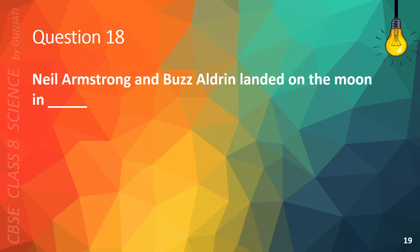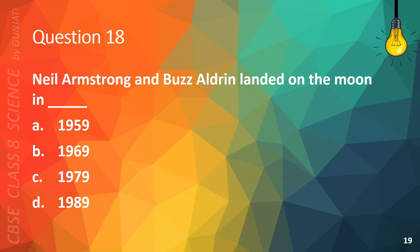Question 18. Neil Armstrong and Buzz Aldrin landed on the Moon in A. 1959, B. 1969, C. 1979, or D. 1989. The correct answer is B. 1969.